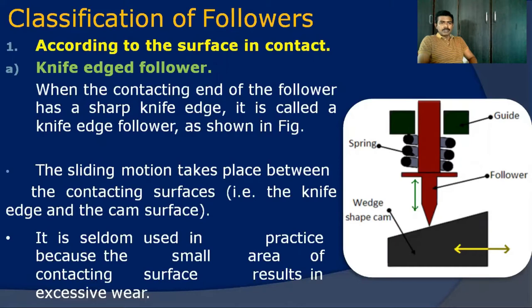According to the type of surface in contact, the followers are classified into different varieties. The first variety is a knife-edged follower. If the contact surface of the follower with a cam is of knife edge, then the follower is said to be a knife-edged follower. Looking at the picture, the contact surface is provided with a sharp edge, and due to this you will have a point contact with the cam surface. This knife-edged follower has the disadvantage of high wear rate.